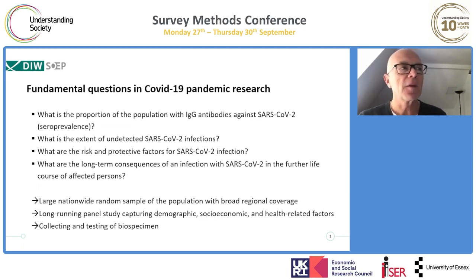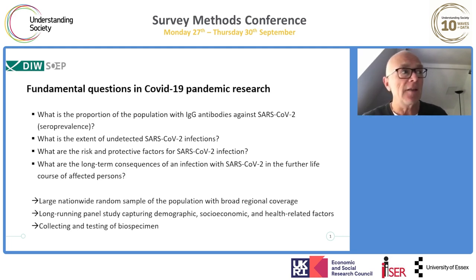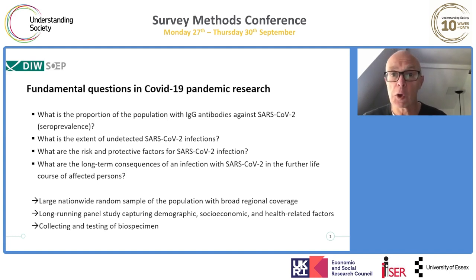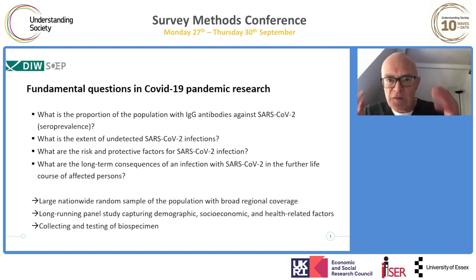There are four fundamental questions in COVID-19 pandemic research. First, what is the proportion of the population with antibodies against SARS-CoV-2 — this is seroprevalence. Second, what is the extent of undetected SARS-CoV-2 infections? Third, from the social sciences perspective, what are the risk and protective factors for SARS-CoV-2 infection? And especially important for life course researchers: what are the long-term consequences of an infection in the further life course of affected persons?